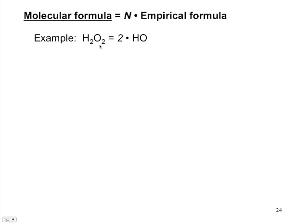So we see the relationship here between the molecular formula H2O2 and the empirical formula is that if we take the empirical formula and multiply it by the integer 2, we get out the molecular formula.